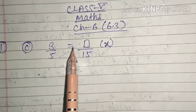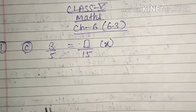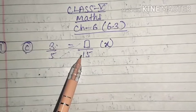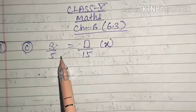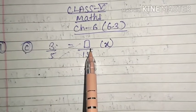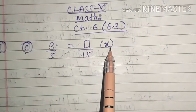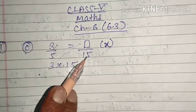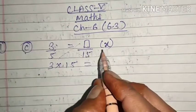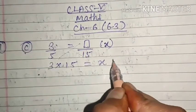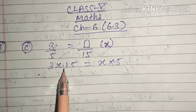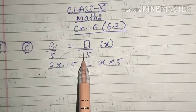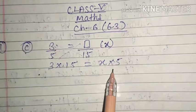I am solving part C, that is 3 upon 5 is equal to dash upon 15. The first method is by cross multiplication. Cross multiplication means the numerator of the first number will be multiplied by the denominator of the second number, and the numerator of the second number will be multiplied by the denominator of the first number. Since we don't know the missing number, we assume it to be x.